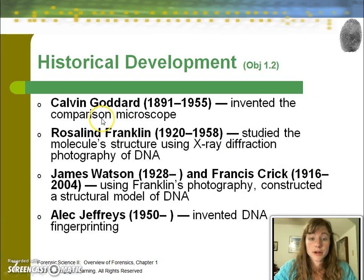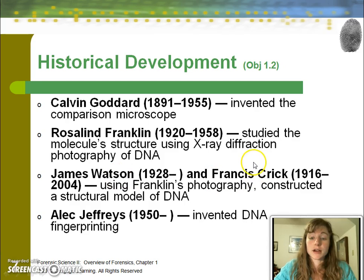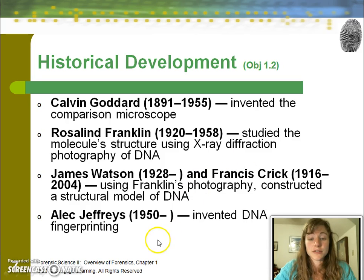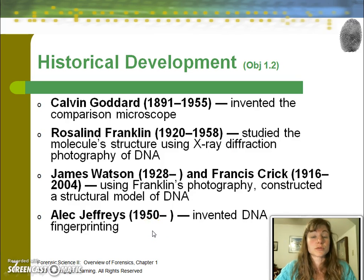The comparison microscope is used especially with ballistics. You may remember from biology: Rosalind Franklin, James Watson, and Francis Crick had big roles in the discovery of DNA as the heritable information. Then Alec Jeffries, in 1984, invented the current model of DNA fingerprinting, which was first used in a criminal case in 1987.